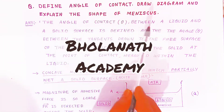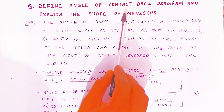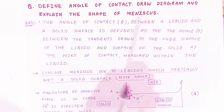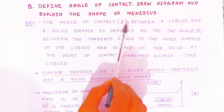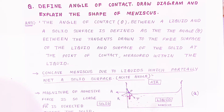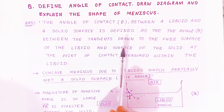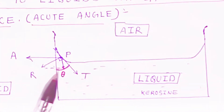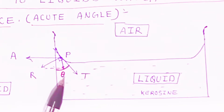This is a 3-marks question coming in the examination: define angle of contact. Here we have taken theta between the liquid and the solid surface. The angle of contact is defined as the angle theta between the tangent drawn to the free surface of the liquid and the surface of the solid.